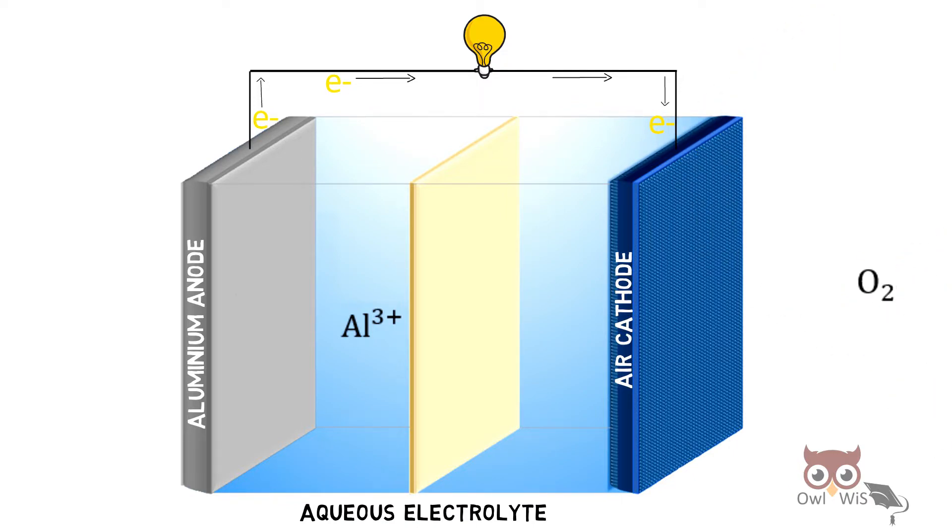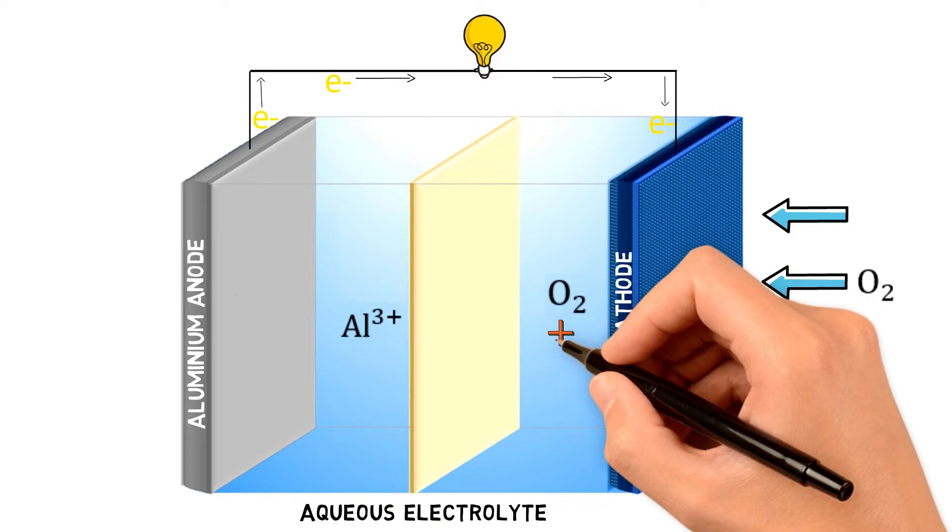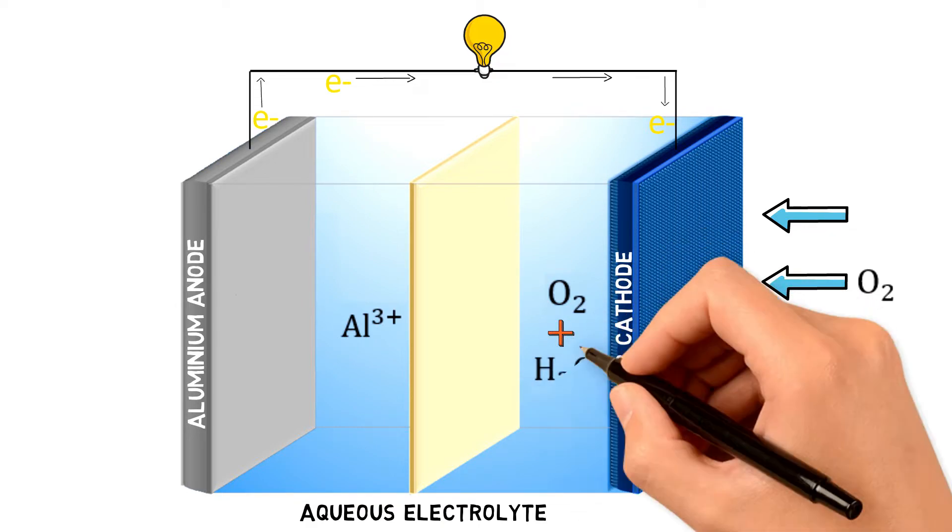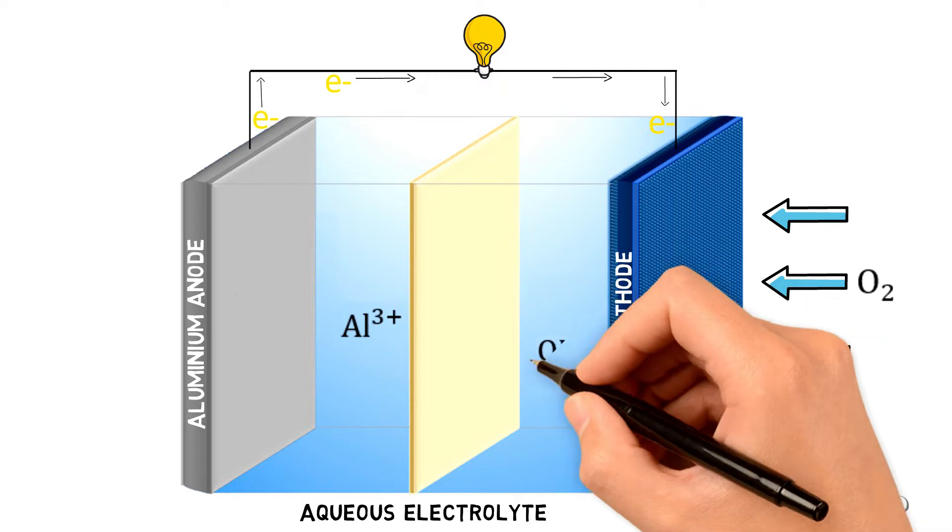At cathode, oxygen from the air enters. This oxygen reacts with water from the electrolyte in order to produce hydroxide ions.